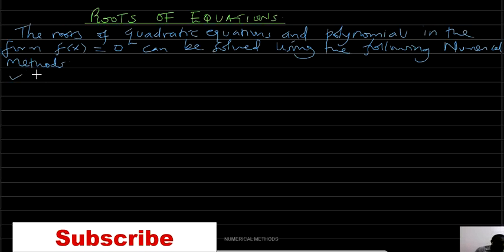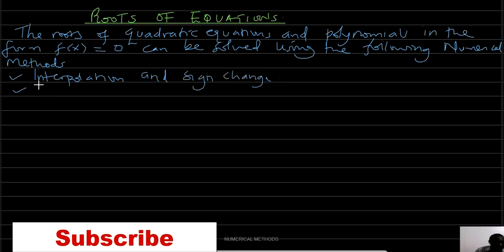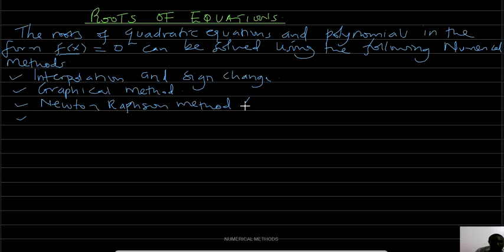The first method we are going to see is interpolation and sign change. Already in our first video about numerical methods we have seen how we can interpolate. If you have not watched the first video please feel free to look for it. The second method is the graphical method, where we graph the function and where it cuts the x-axis that is where the root lies. We shall also have the Newton-Raphson method, which people call NRM, and General Stroke or Simple Iteration Method.